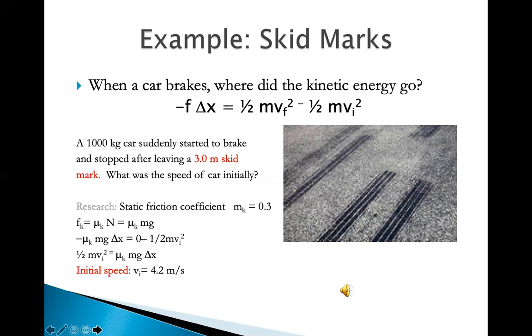And therefore, the work done by friction force is negative μk, that's the kinetic friction coefficient, multiplied by mg, the weight, multiplied by the displacement, Δx, equals to the change in kinetic energy, which is half mv initial squared. So if we cancel out the mass, because the mass is on both sides, we actually do not need to use the mass. The initial speed is 4.2 meters per second.